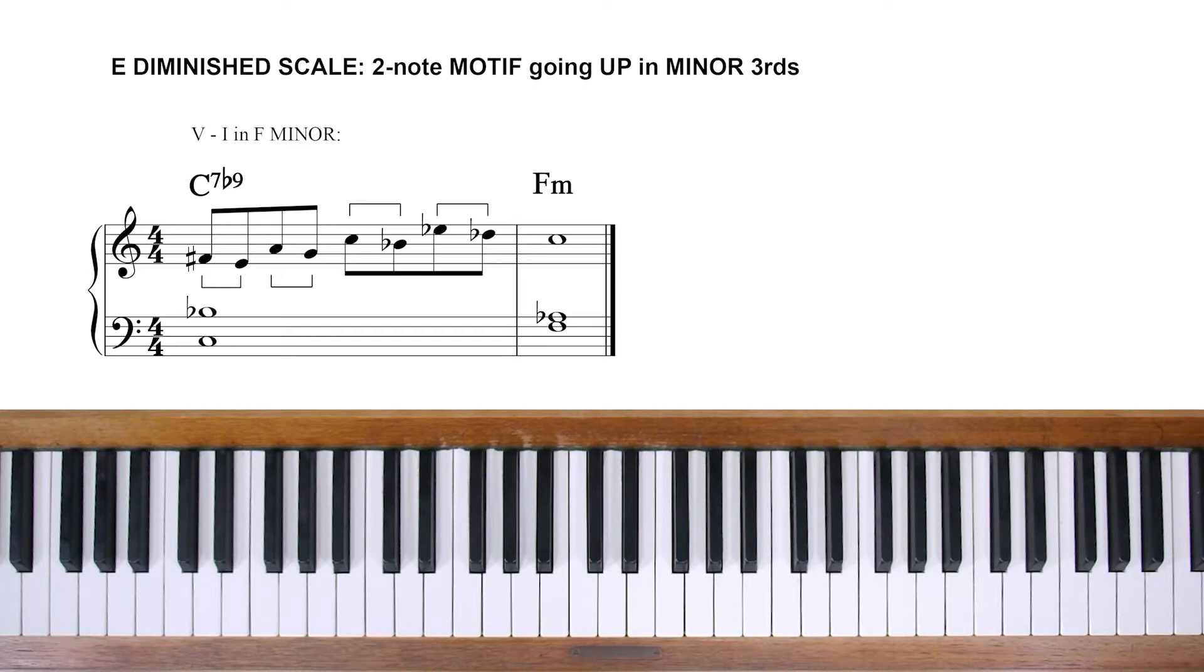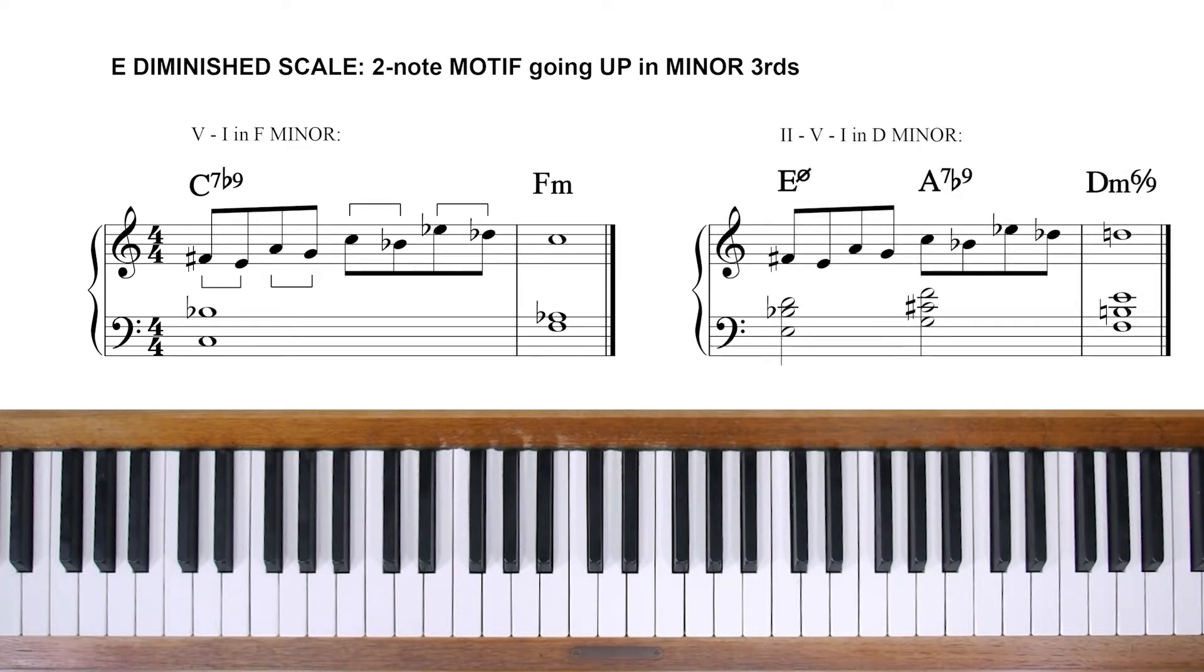Furthermore, the same diminished scale can be played over the two chord that might precede the V chord in a minor 2-5-1. In a minor key, two chords are normally half diminished, minor 7 flat 5. This is convenient because it means we can play an E diminished scale over an E minor 7 flat 5 chord. That is starting on the root, not the third as with dominant chords. And that scale will automatically have the correct notes of the dominant 7 flat 9 chord that follows it.